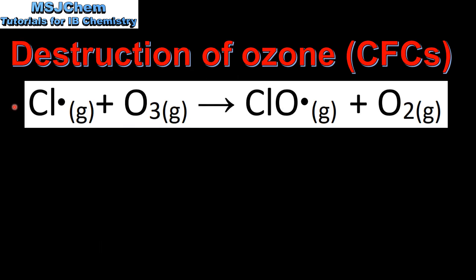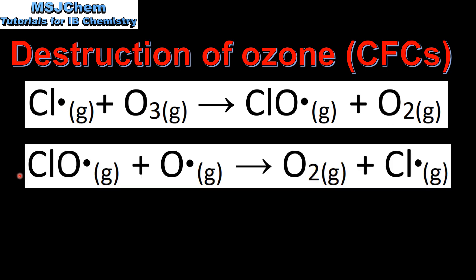In this equation we have the chlorine radical reacting with ozone to form a chlorine monoxide radical and molecular oxygen. In the second equation we have the chlorine monoxide radical reacting with an oxygen radical to form molecular oxygen and a chlorine radical. The chlorine radical is a catalyst because it is reformed in this reaction and then goes on to react again with ozone.